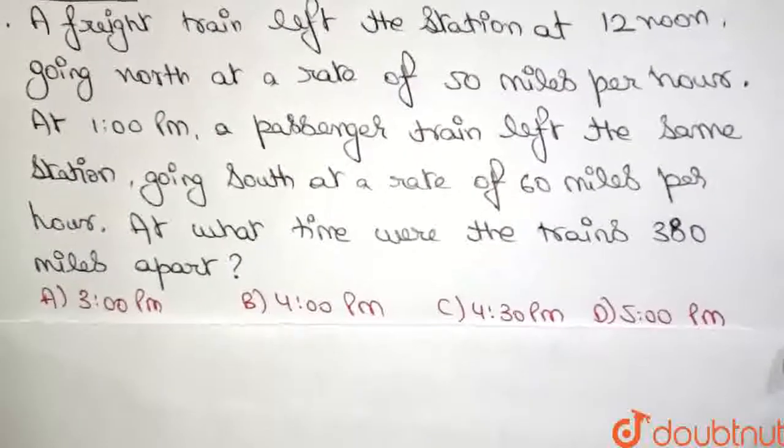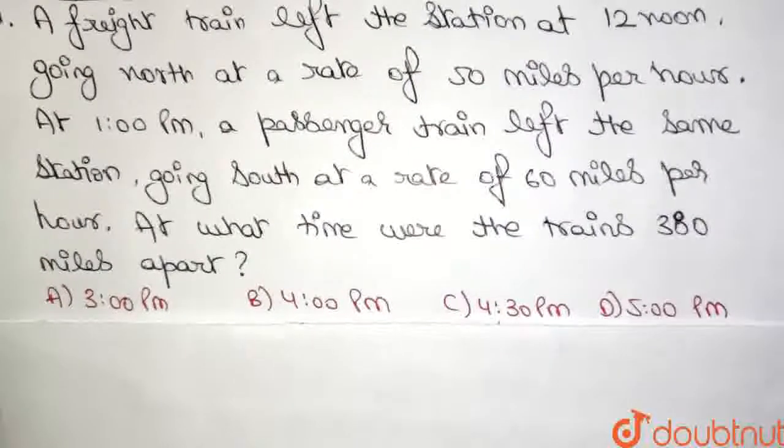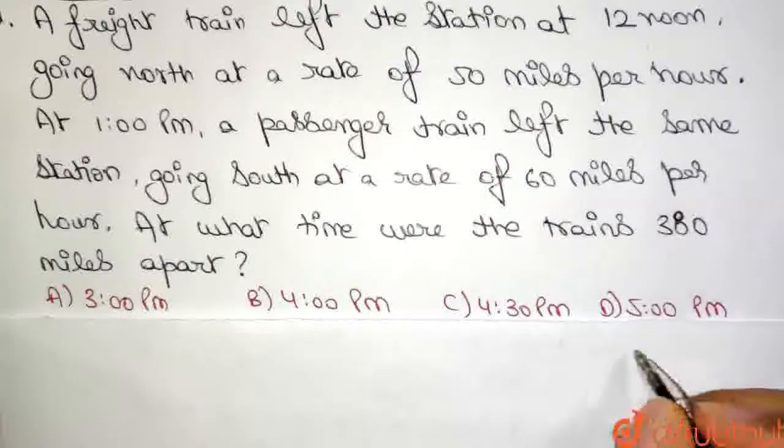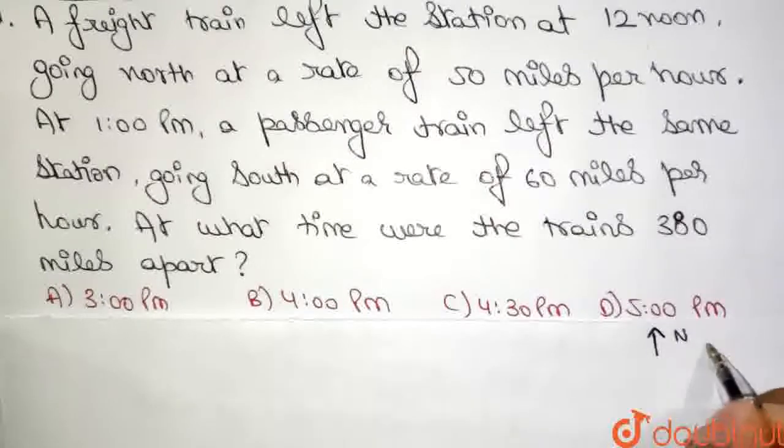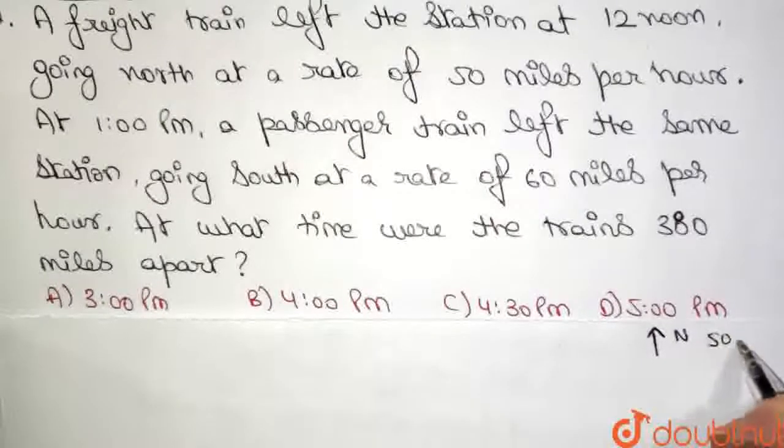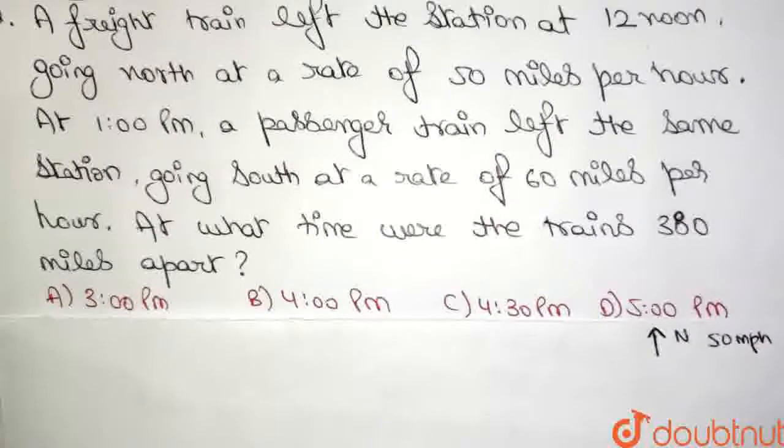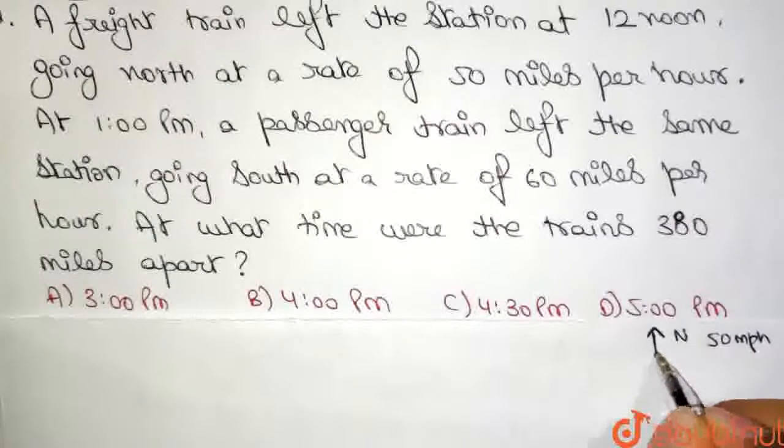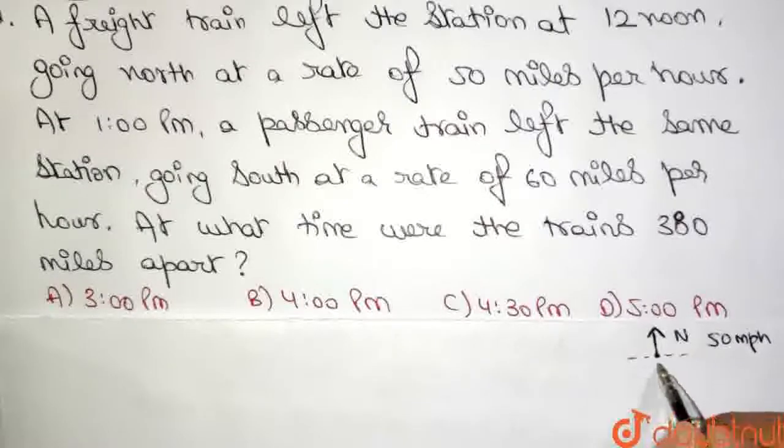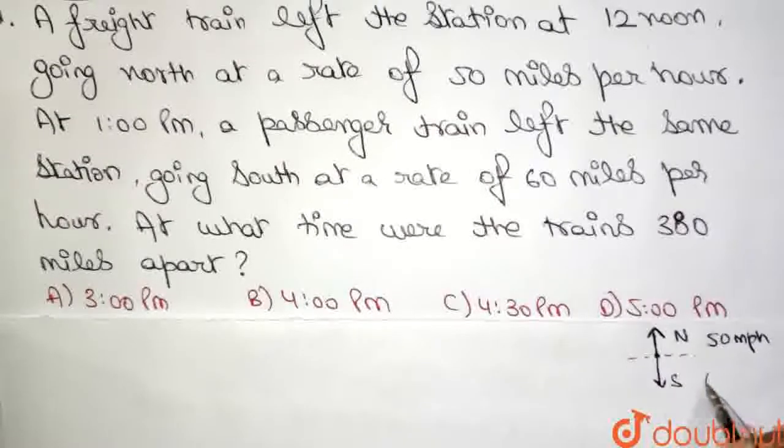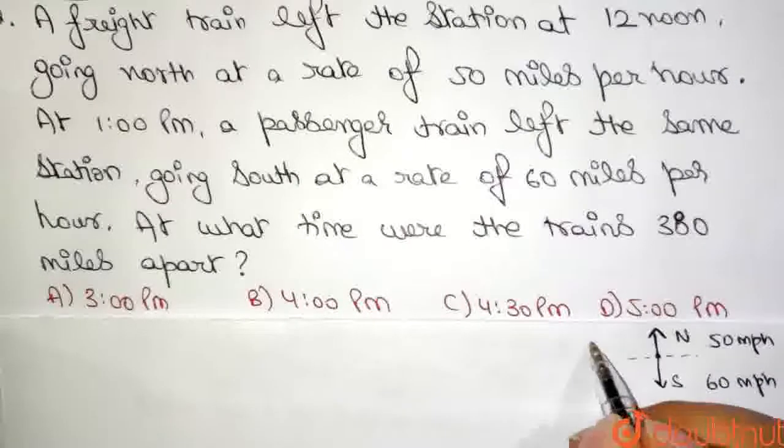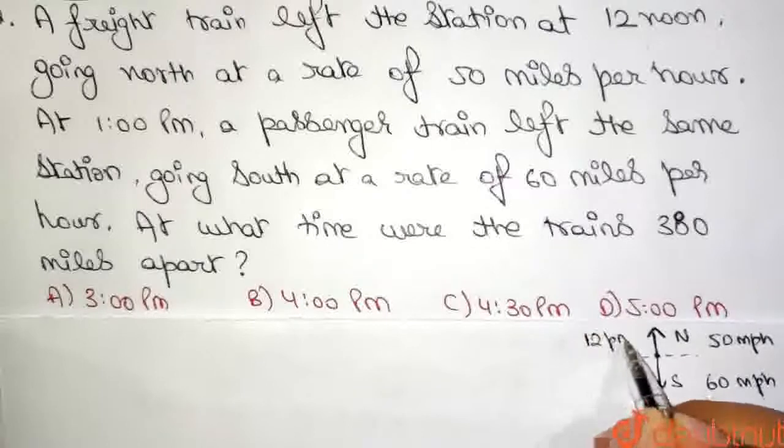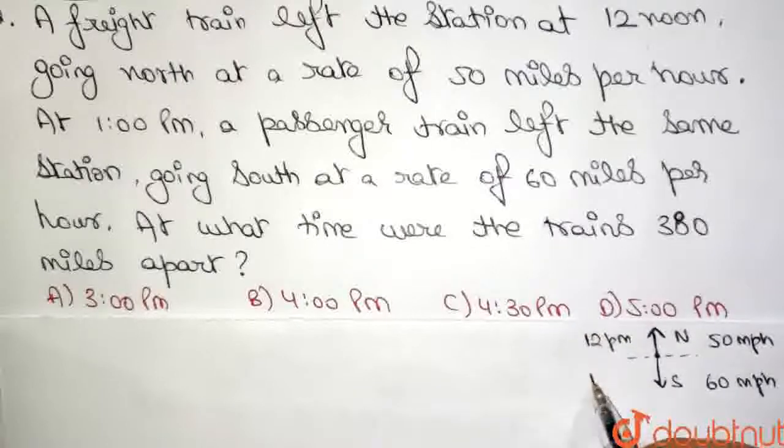So, let us look at this particular question. Now, we have in the question been given that there is a train moving north, which is travelling at a rate of 50 miles per hour. And there is a train which is going south from this station. Let us consider this line as the station, which is going south at a rate of 60 mph. The only difference is the time at which they leave. So, this train actually left already at 12 pm, which is 12 noon. And this is about to leave at 1 pm or 1 hour after that.